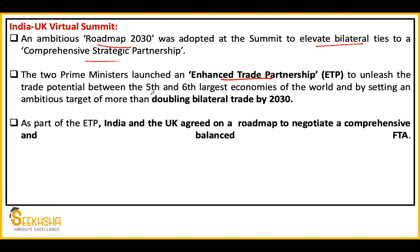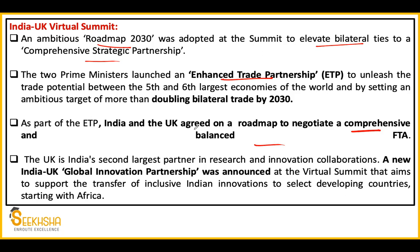As part of the ETP, India and UK also agreed to a roadmap to negotiate a comprehensive and balanced free trade agreement. They said that trade should be balanced in both countries — it should not be that India is continuously exporting and the UK is only importing, creating a large balance of payments imbalance. Besides that, they also started a new India-UK Global Innovation Partnership to support the transfer of inclusive Indian innovations to select developing countries, starting with Africa.